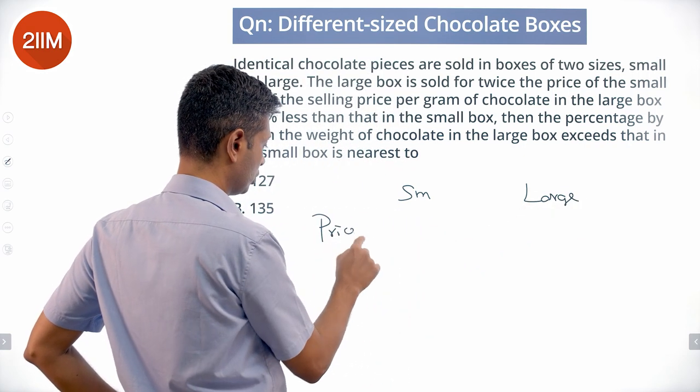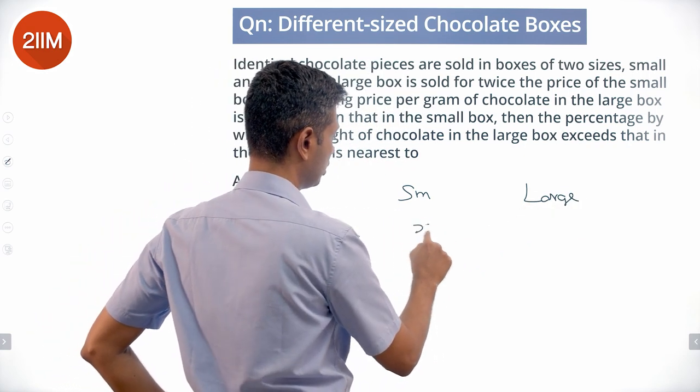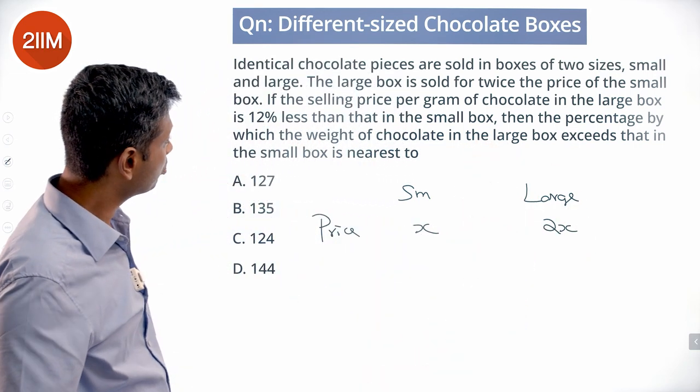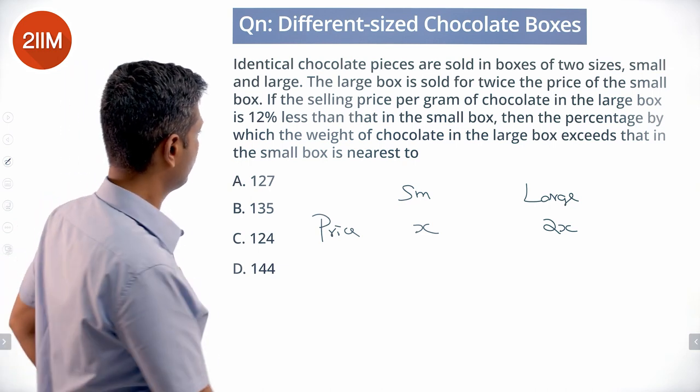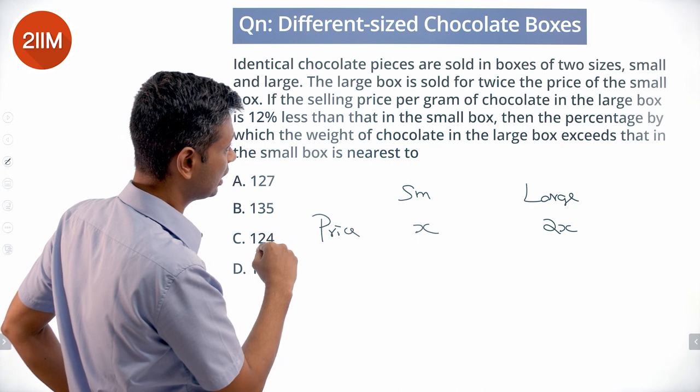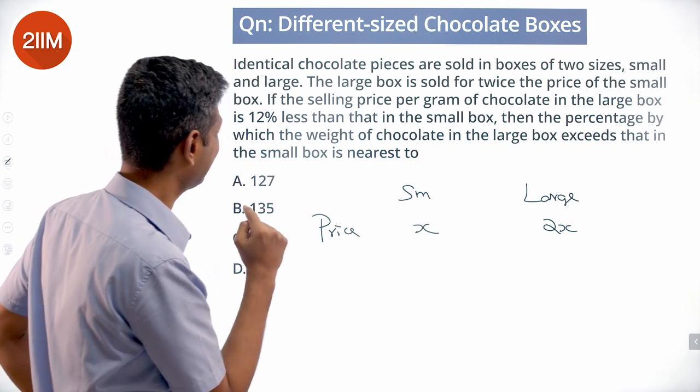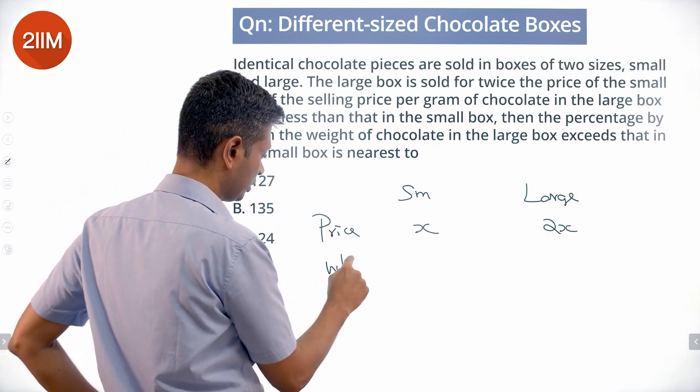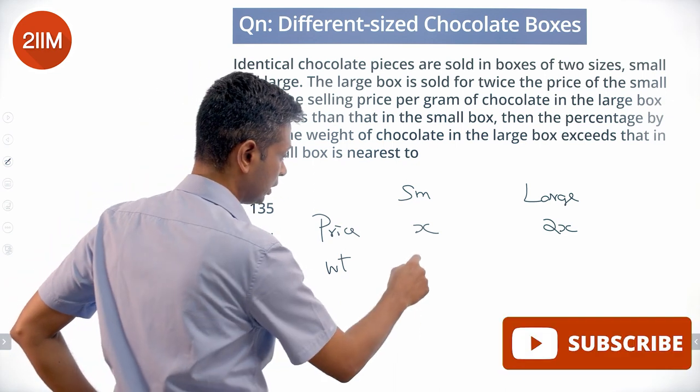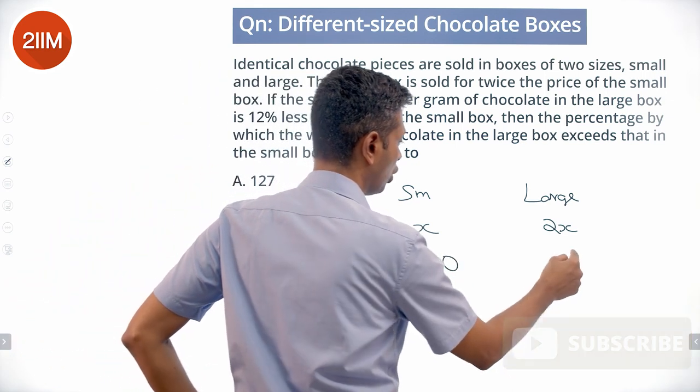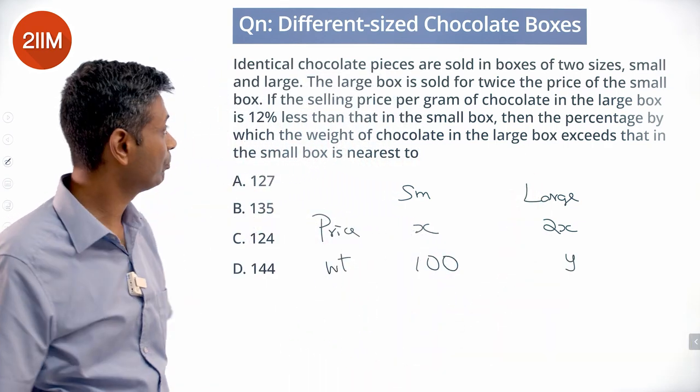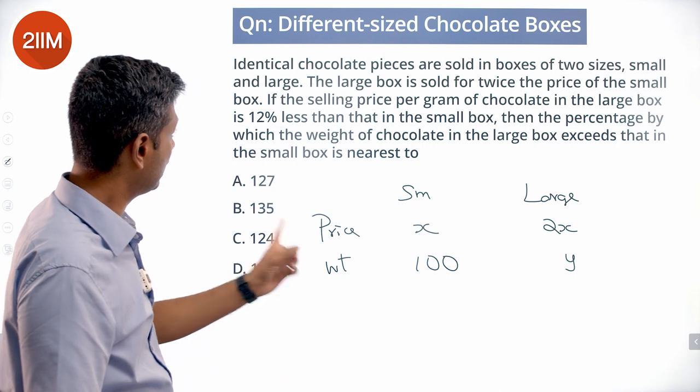If this is X, this is 2X. The selling price per gram... so let's say we want to do the weight. The weight of chocolate in the large box exceeds that in the small box. Let's say this is 100 and this is Y, so that we can find the percentage difference straight away. This is weight 100 and Y.